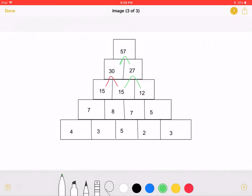15 is equal to 7 plus 8, one odd and one even. And 12 is equal to the sum of two odds.